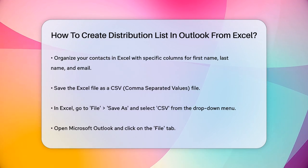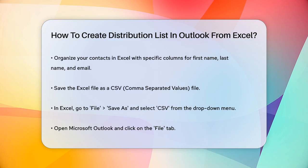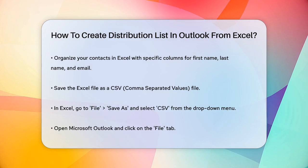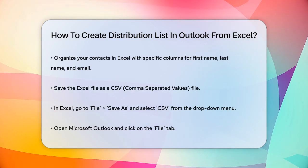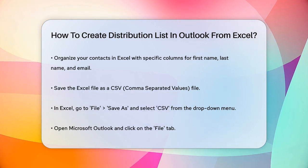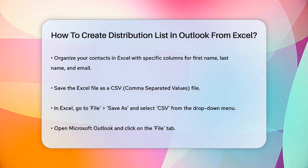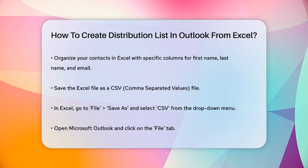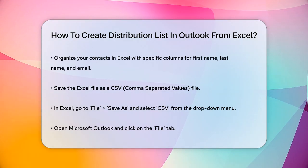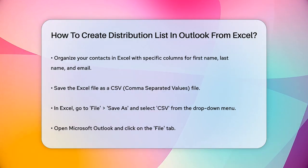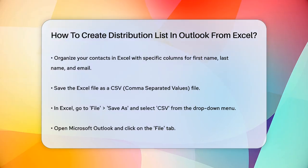First, you need to prepare your Excel file. Make sure your contacts are organized so that each column represents a specific piece of information, like first name, last name, email, and so on. Save this Excel file as a CSV (comma-separated values) file.